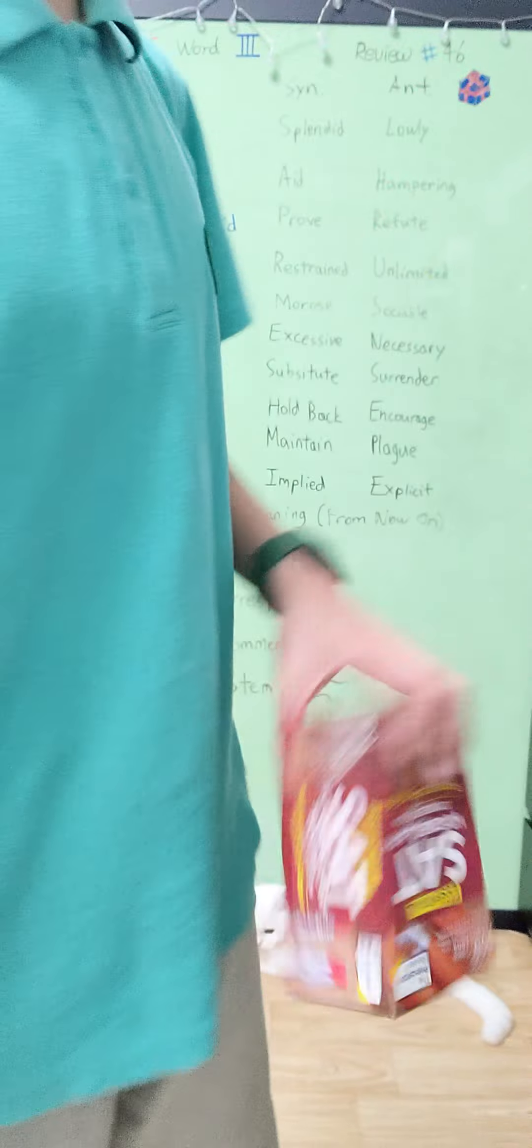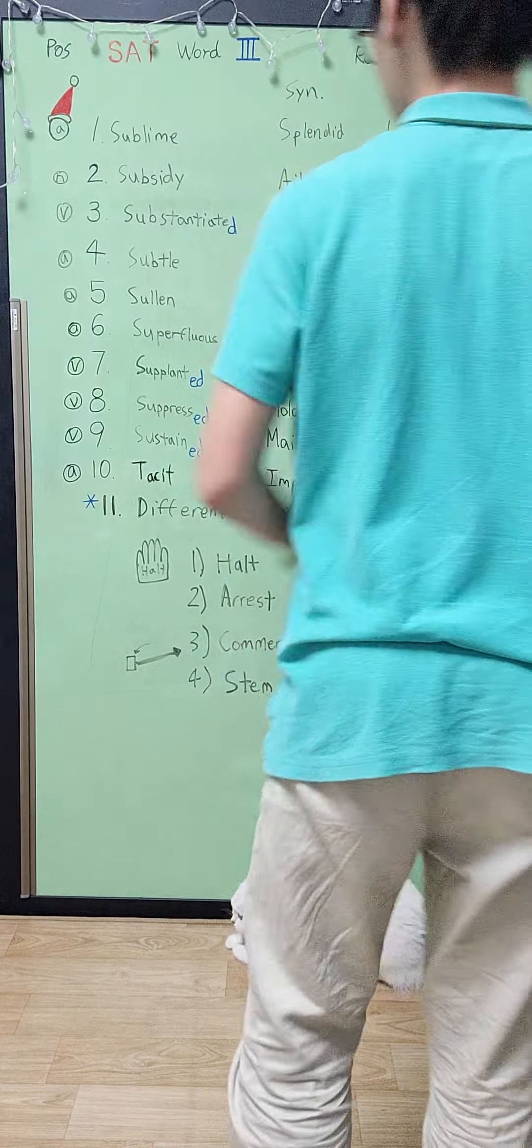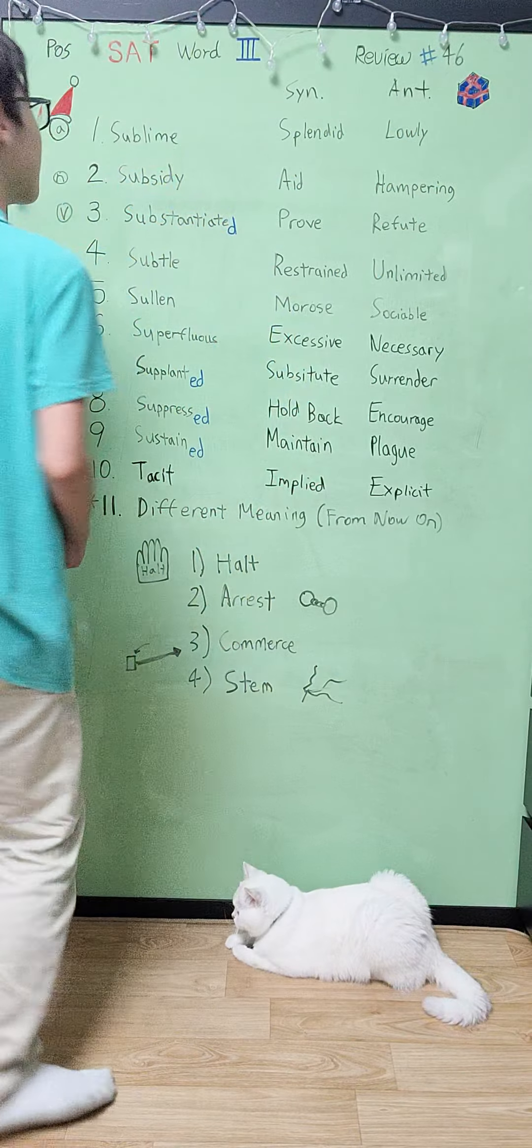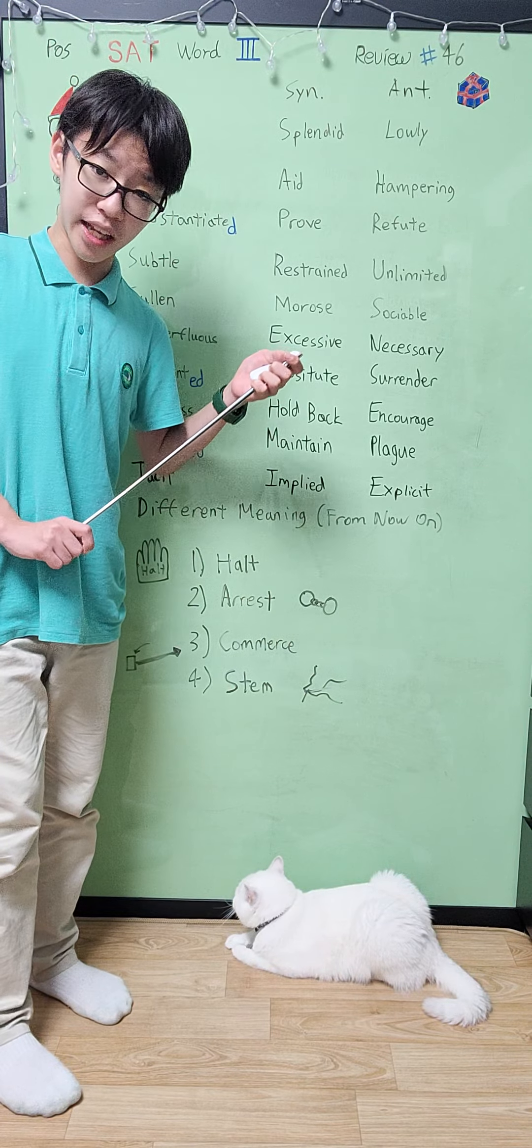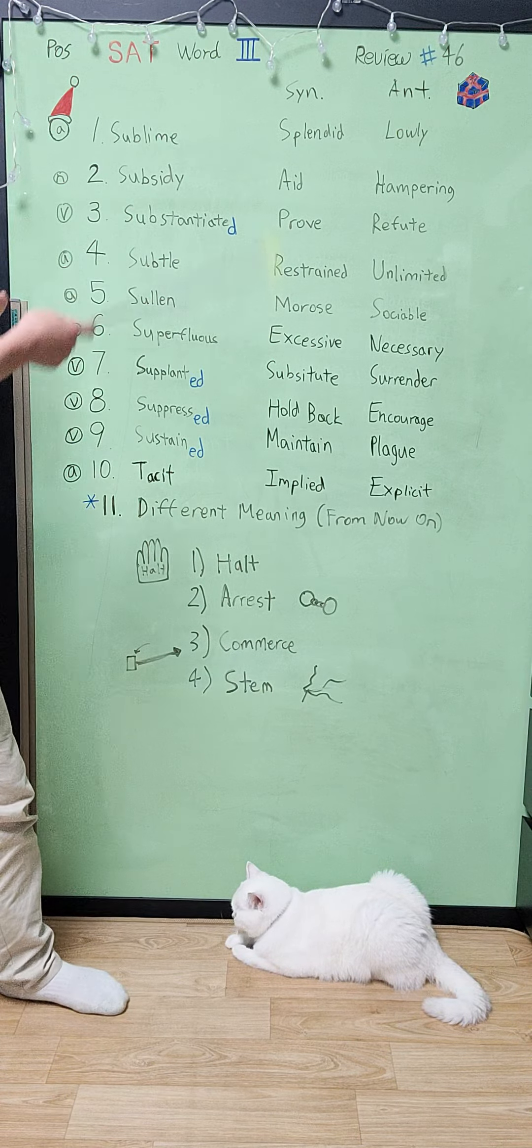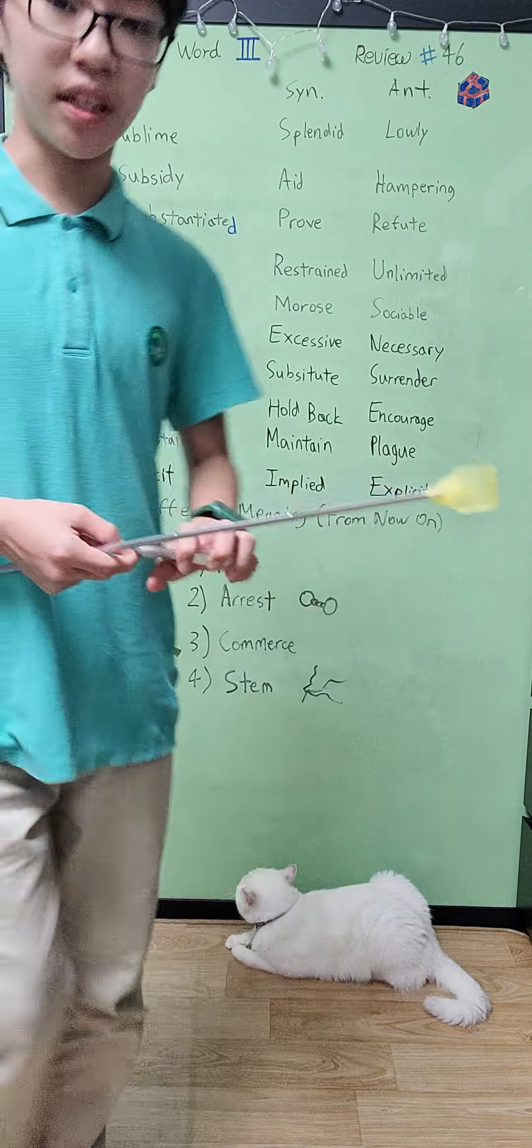Essential SAT vocabulary covers, and now it's review number 46. What a nice little number, 46 - both of them add up all the way to 10. So here we are, here are 10 words and let's start with limes.